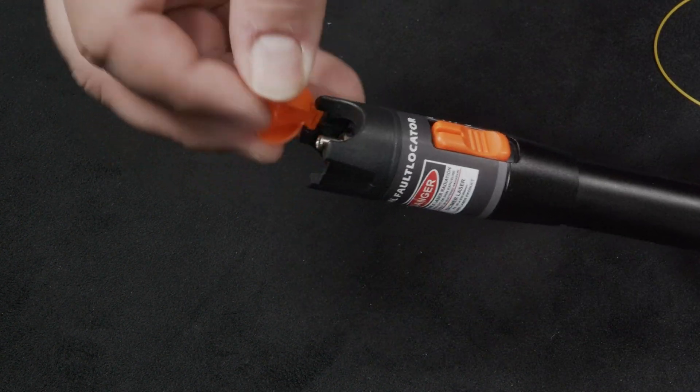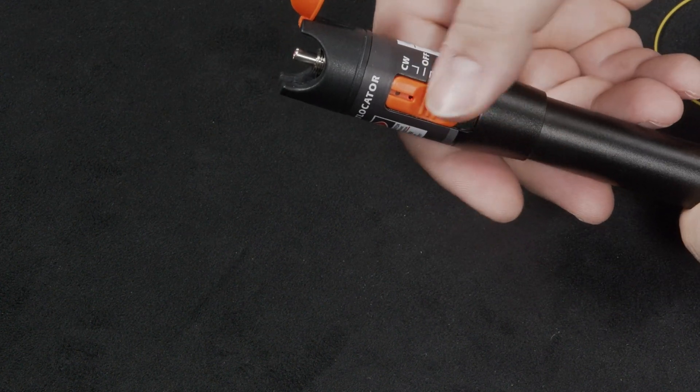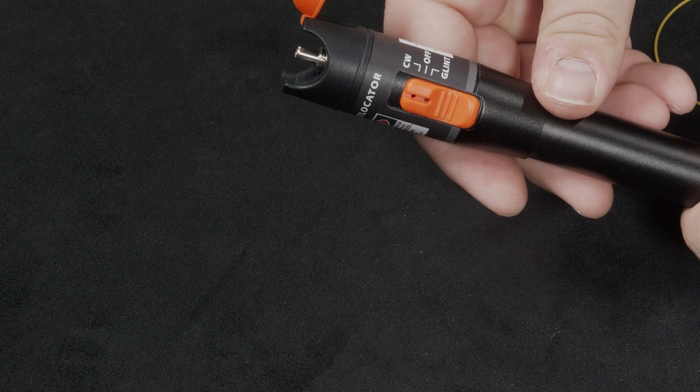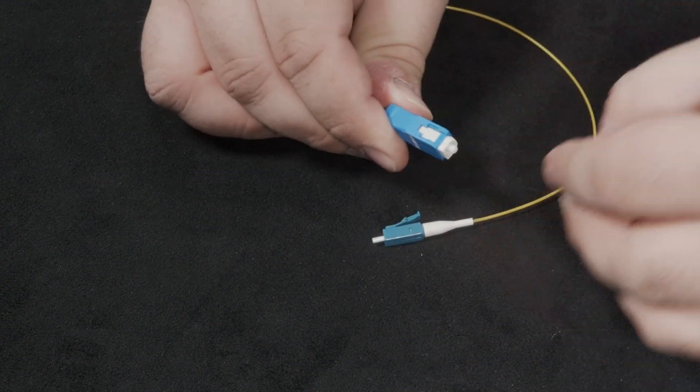The visual fault locator has a dust cap to protect the end and a switch to turn it on, off, or blink. Take the dust cap off the SC end of the adapter and connect it to the visual fault locator.